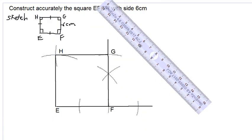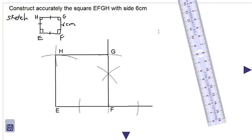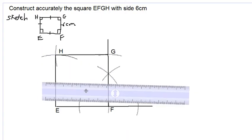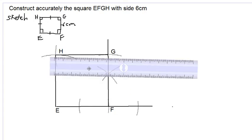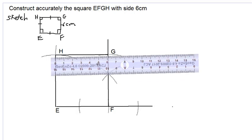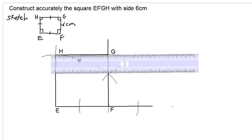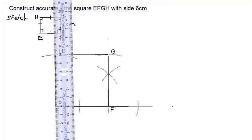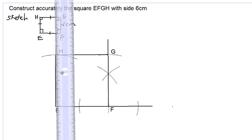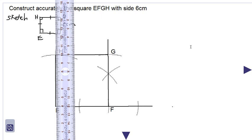That gives us our square. We can verify the lengths using our ruler to ensure all sides are six centimeters long, and use our protractor to ensure the interior angles at the vertices are 90 degrees. So far it looks like we are just about accurate. Thanks for watching and all the best to you in your studies — peace.